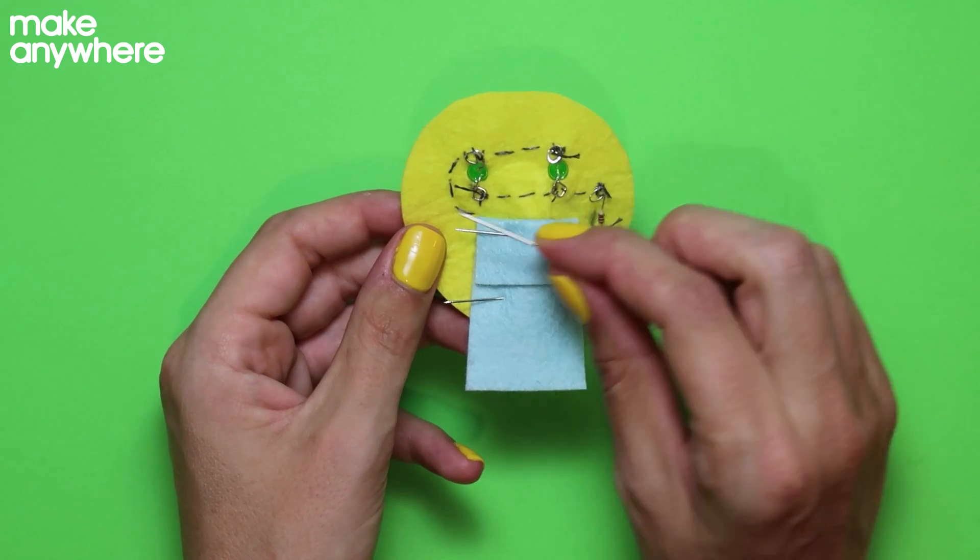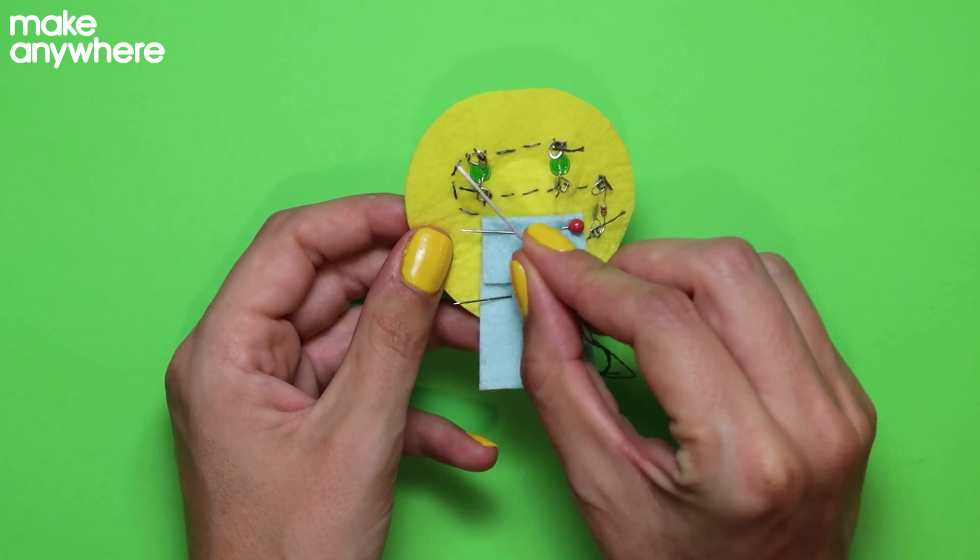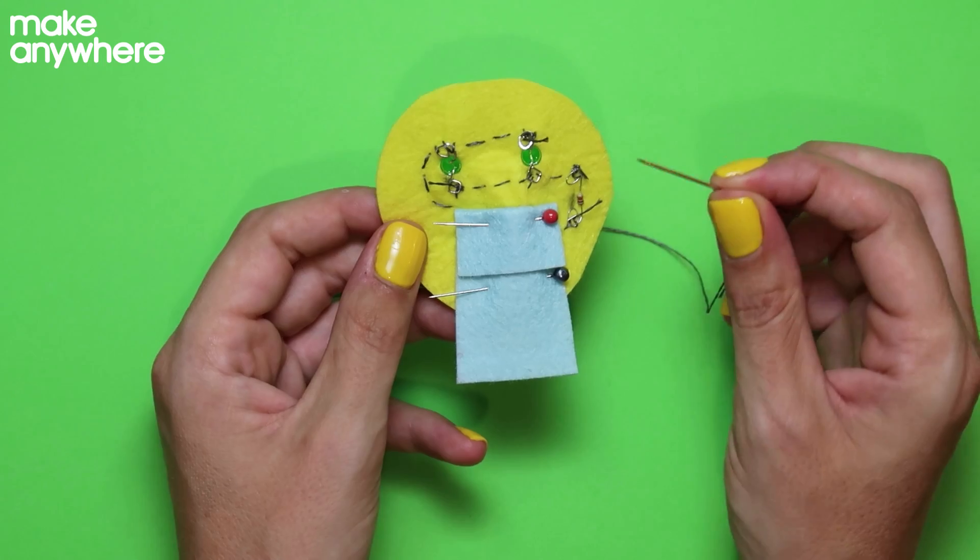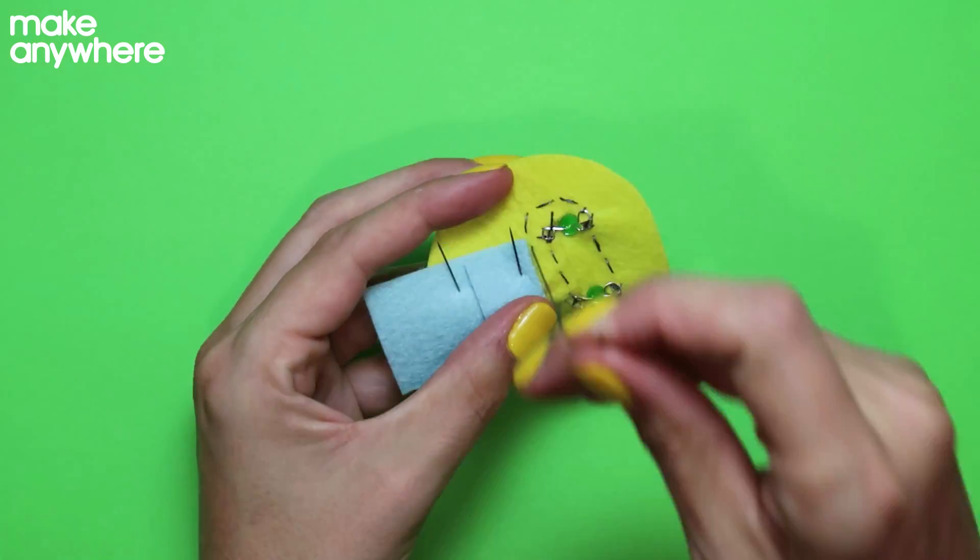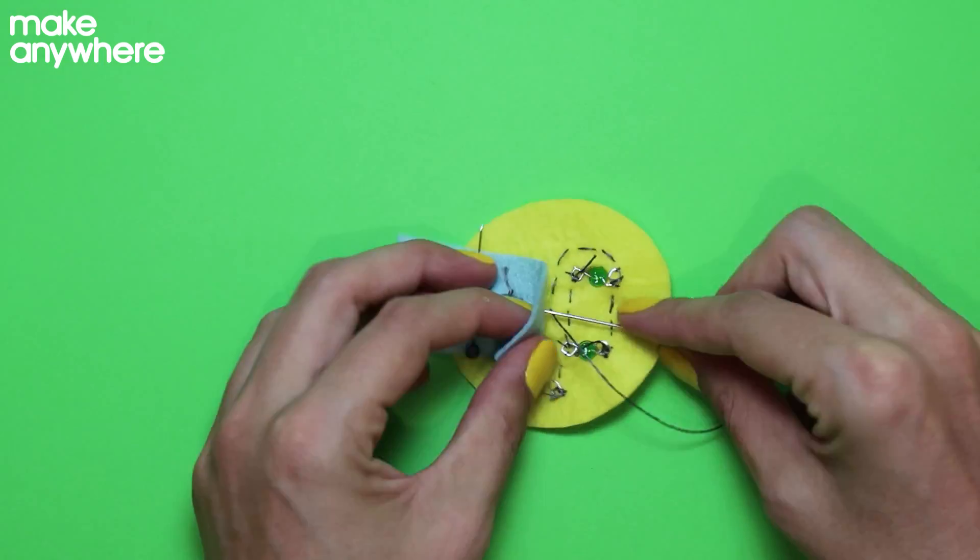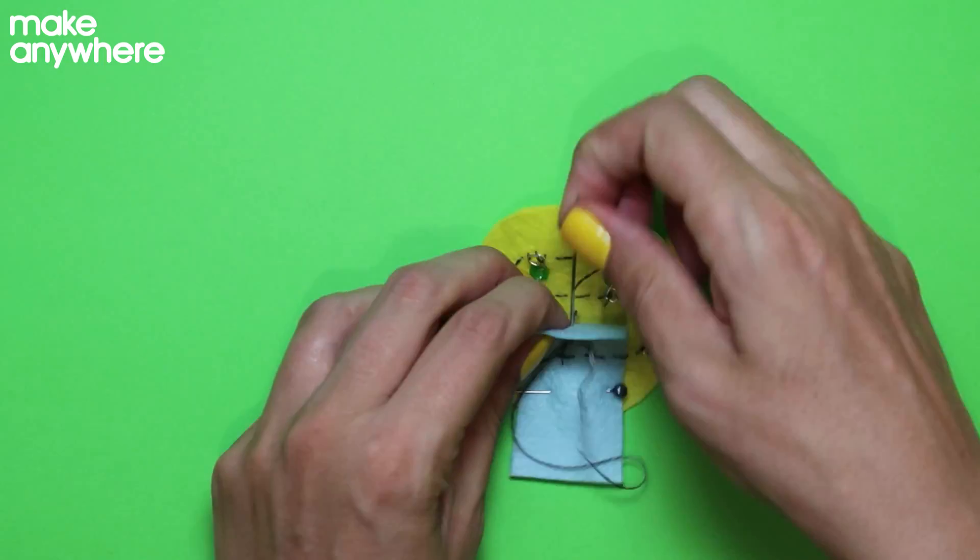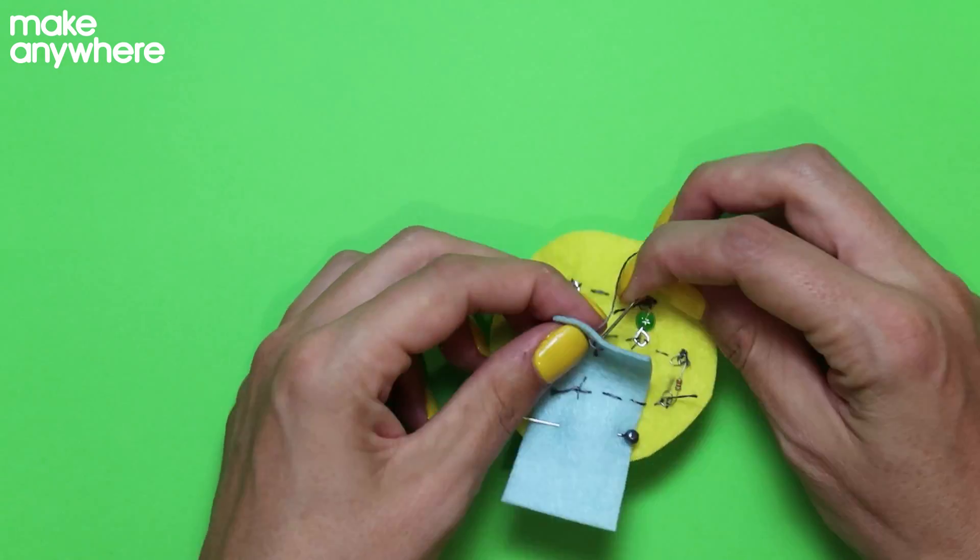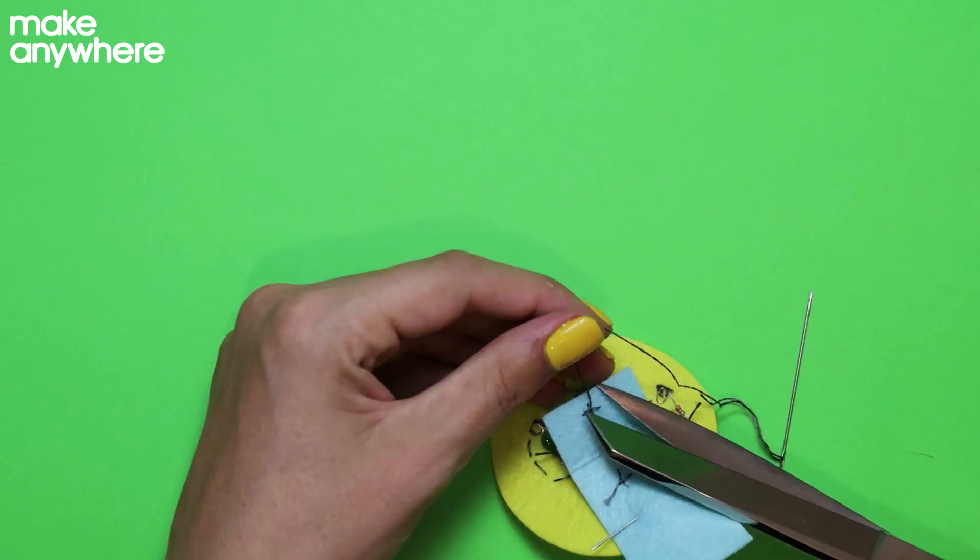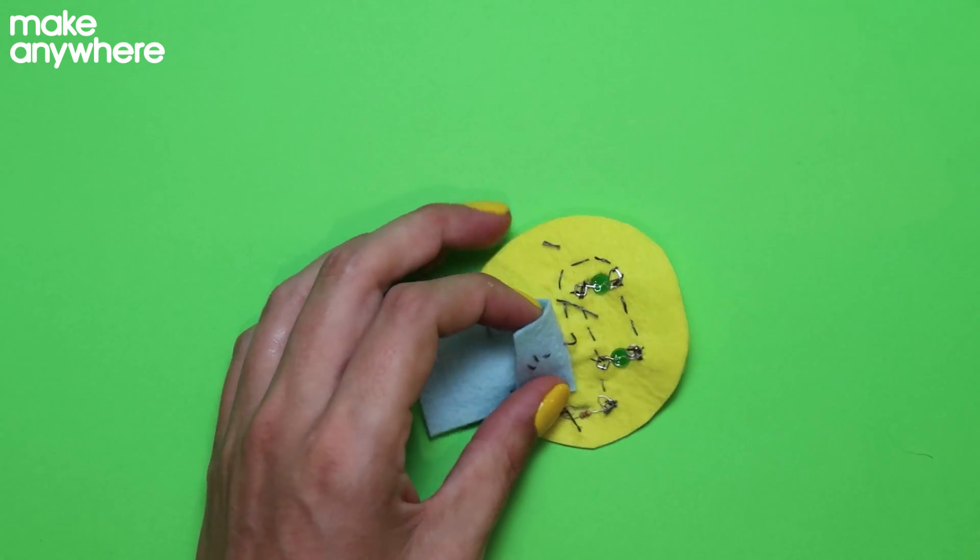So what I recommend you doing at the end is chopping all of these a little bit shorter. As you're stitching, you want to make sure that the ones that are connected to the positive never touch or cross the ones that are going to the negative. Now go through and trim these tails.